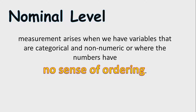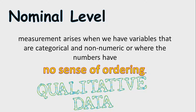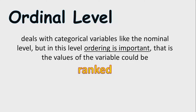Nominal level measurement arises when we have variables that are categorical and non-numeric, or where the numbers have no sense of ordering. For example, a student class number — though it is numeric, it represents an individual. It is not quantitative data but qualitative data, and that can also be an example of a nominal level of measurement because it has no sense of ordering.